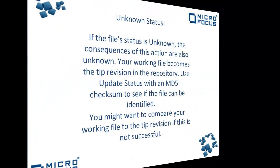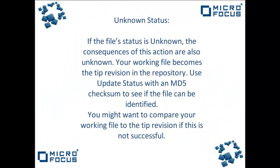Our last status is the unknown status. If the file status is unknown the consequences of this action are also unknown. Your working file becomes a tip revision in this repository. Use the update status with the MD5 checksum to see if the file can be identified. You might want to compare your working file to the tip revision if this is not successful.